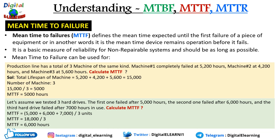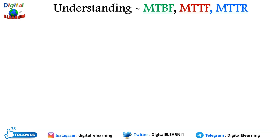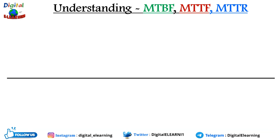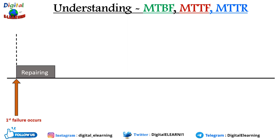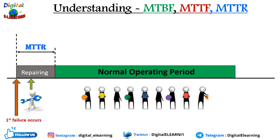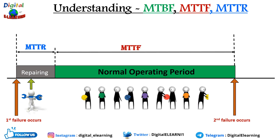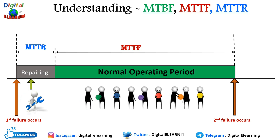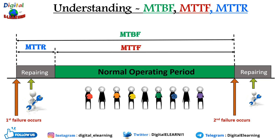Now let's look at the graphical relationship between all three metrics. Assuming a device has a first failure, we start repairing it — that repair duration is the Mean Time to Repair (MTTR). Once repaired and back in operation, the device runs until a second failure — that operational period is the Mean Time to Failure (MTTF). The total time from the first failure to the second failure is the Mean Time Between Failure (MTBF).